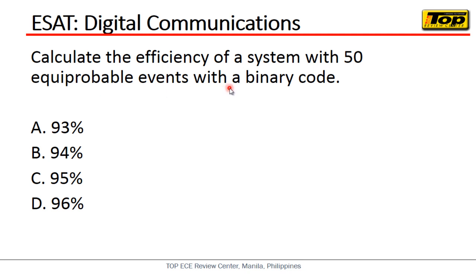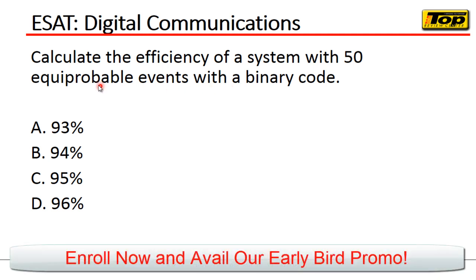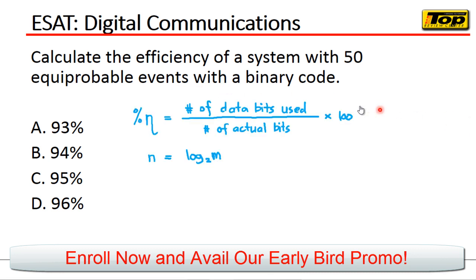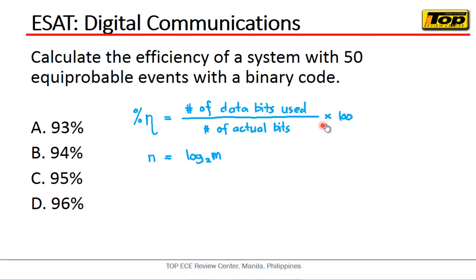How do we calculate the efficiency of a system having these given equiprobable events? The equation is straightforward: the efficiency is equal to the number of data bits used over the number of actual bits, multiplied by 100.